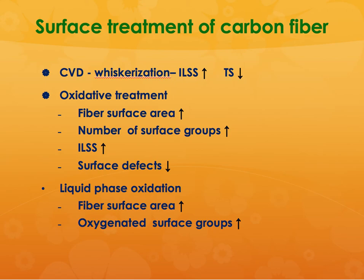Whiskerization is done by a chemical vapor deposition process which can improve the interlaminar shear strength of the composite. This is one big issue with most polymer matrix composite materials, especially those with carbon fibers — you would mitigate that by having whiskers grown on the fiber surface.